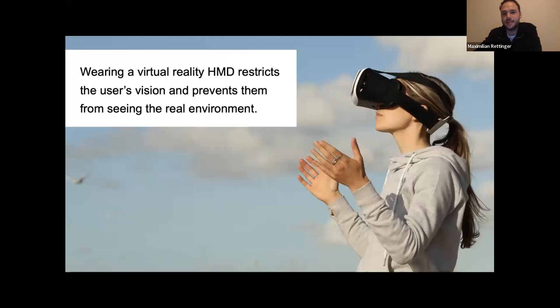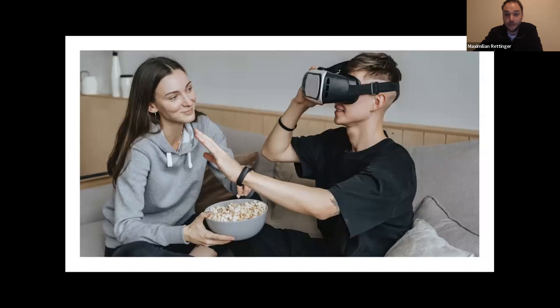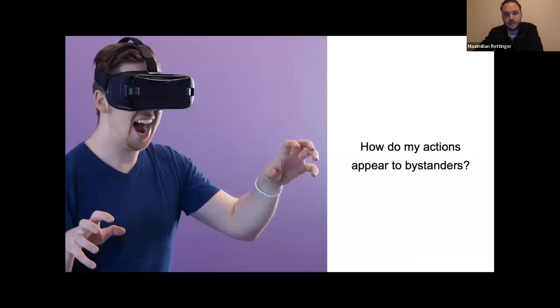Most of you have already had the experience that when you put on a VR HMD, such as an HTC Vive, Oculus Rift, or PlayStation VR, you were no longer able to visually perceive the real environment and therefore could not see the people around you anymore. VR users don't know if they are standing in front of a person or where a person is. It is also difficult to assess how many people are in the same room and what their feelings are. These uncertainties lead to higher resource consumption of working memory, for example due to social embarrassment.